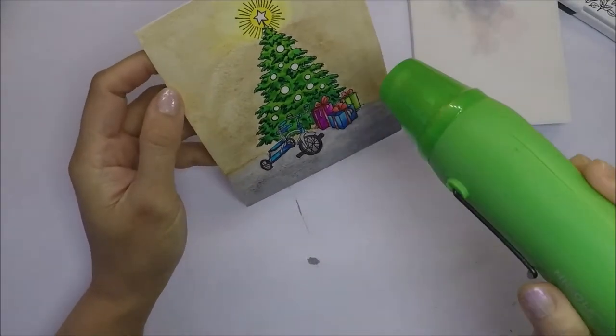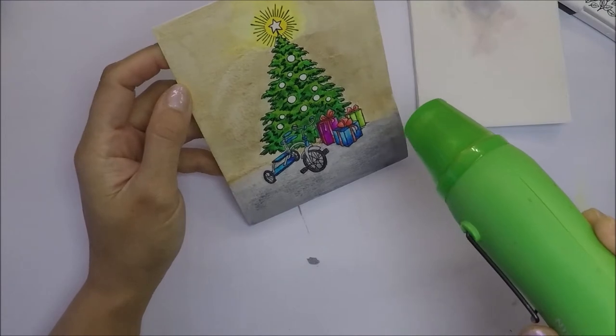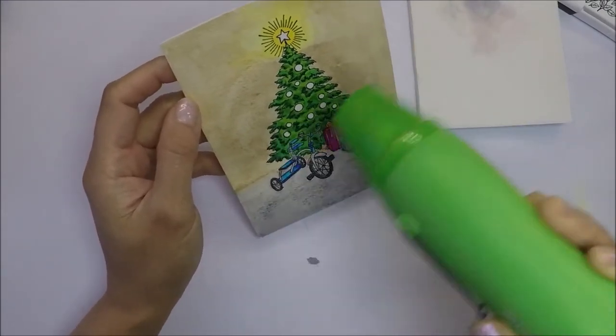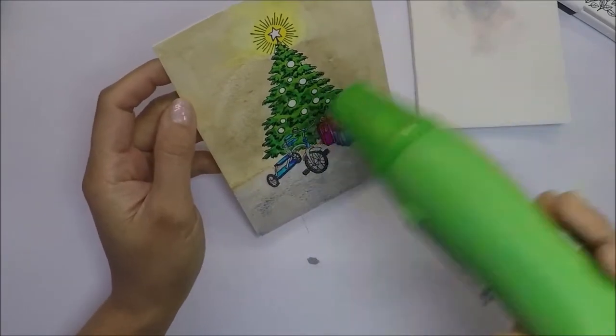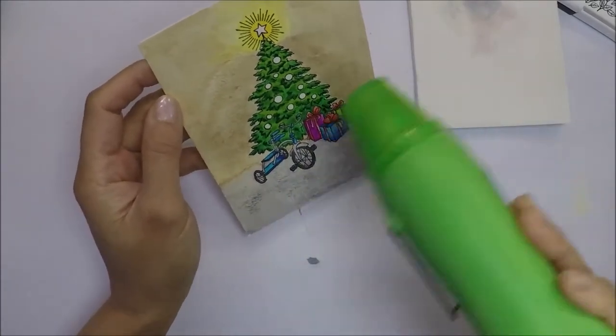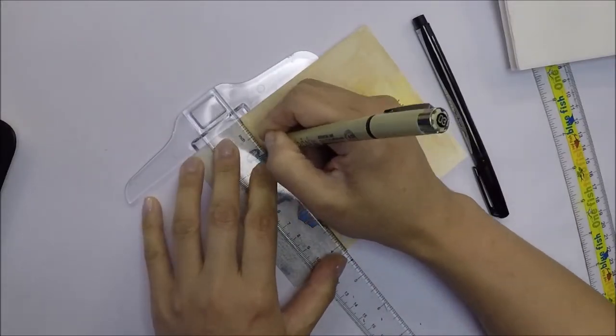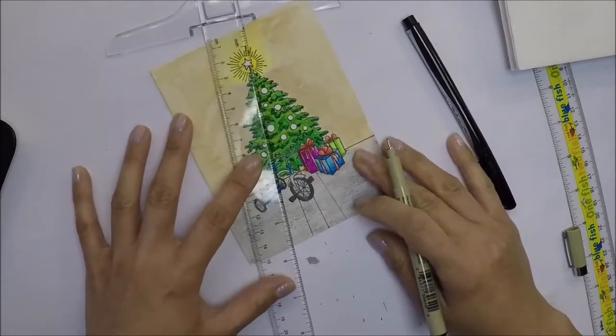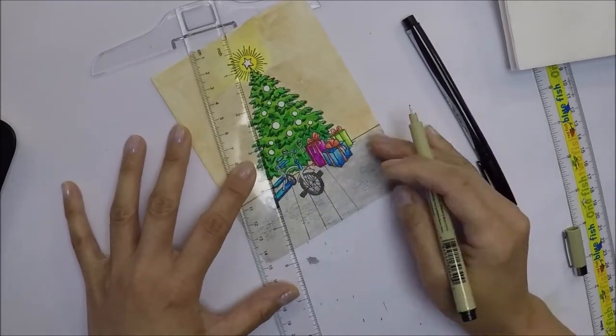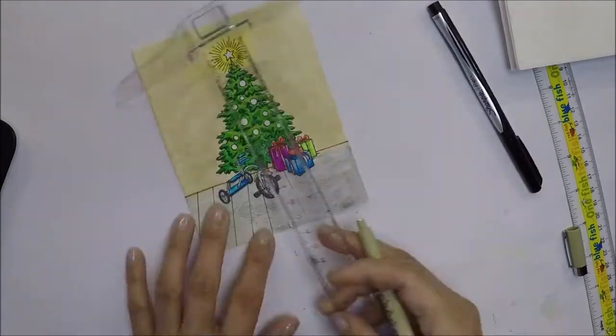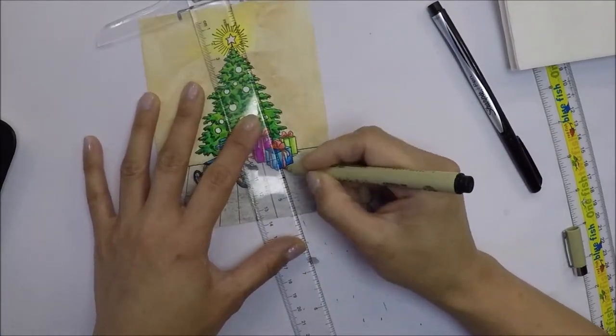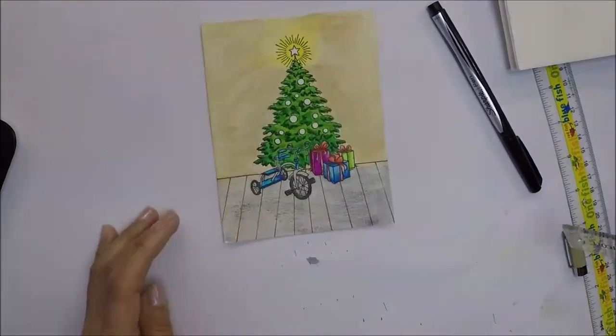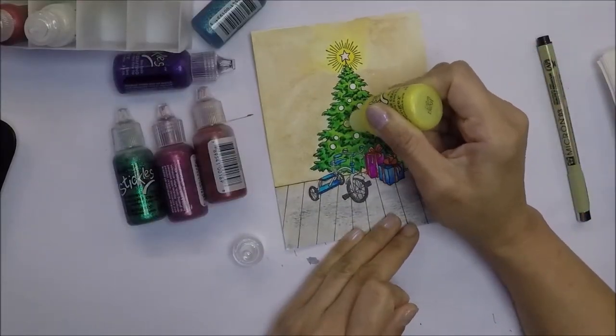After I colored the whole panel, I'm going to dry it with my heat tool. As you can see, the ornaments are not colored because I'm going to use stickles on them later. After the panel is dry, I will add lines on the bottom. I want the bottom to have a wood floor. I'm using my T-ruler to get a straight line and I'm using a Micron pen, I think this one is the black 03 pen.